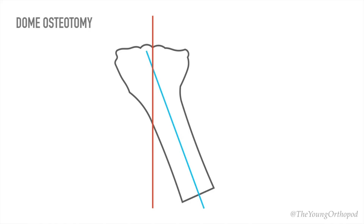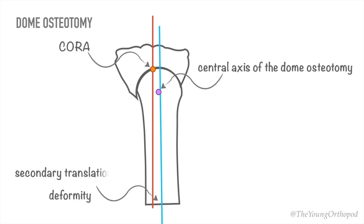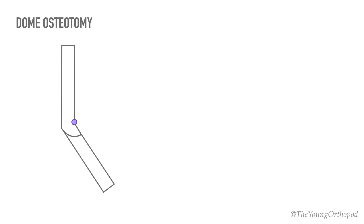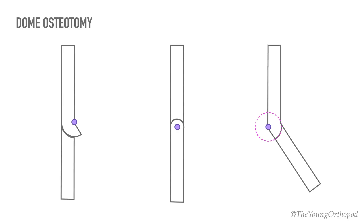If the central axis of the dome osteotomy does not correspond to the CORA on the bisector line, a secondary translational deformity is produced when the deformity is corrected. Focal dome osteotomies can be made around the CORAs regardless of whether closing, neutral, or opening wedge procedures are being performed. As with straight cut osteotomies, there is a similar change in bone length with the corresponding focal dome osteotomies.